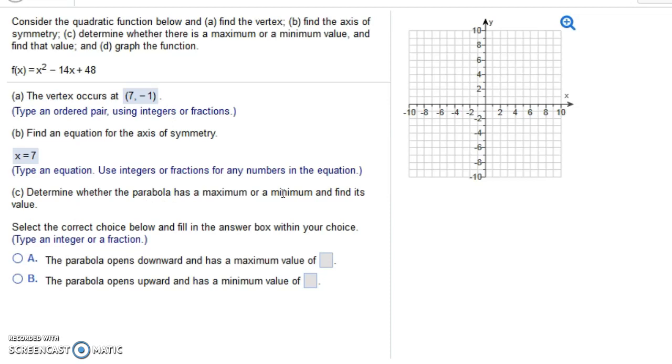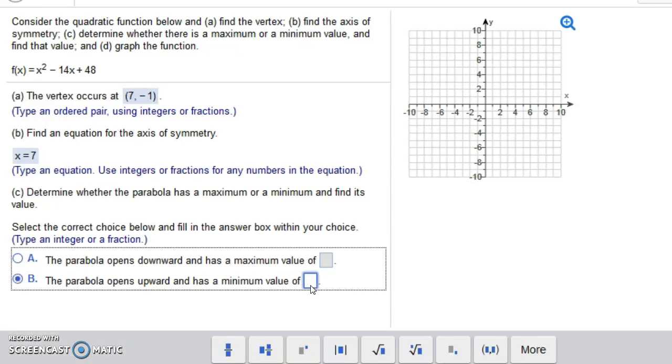Part C, determine whether the parabola has a maximum or minimum value. And then find this value. Well, notice again, it's a parabola that opens up because we have a positive leading coefficient. So there will be a lowest point. There will be a minimum. So it's going to be part B. And that minimum value is minus 1.